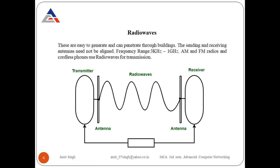The first type is radio waves. These are easy to generate and can penetrate through buildings — they can cross buildings very easily. The sending and receiving antennas need to be aligned, meaning they have to face the same direction. The transmitter and receiver are both in the line of propagation. The frequency range of radio waves is from 3 kilohertz to 1 gigahertz.